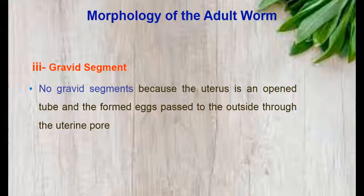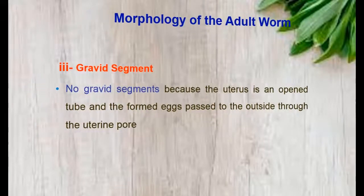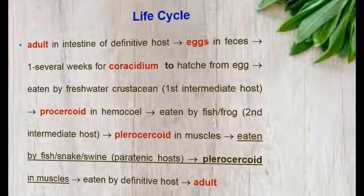Regarding the gravid segment of Diphyllobothrium latum, there is no gravid segment because the uterus is an open tube, and the formed eggs pass to the outside through the uterine pore.